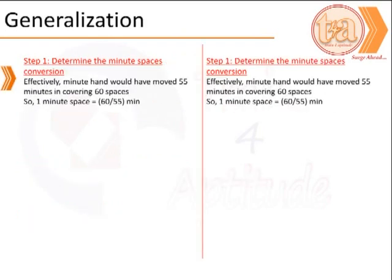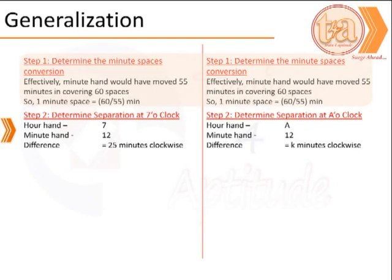For generalization, the first step is to determine the minute space conversion, which is always 60/55 minutes per minute space. In a generic case, instead of 7 o'clock, assume it's A o'clock. The hour hand would be at numeral A, the minute hand at 12, and the difference would be k minutes between them in a clockwise direction.